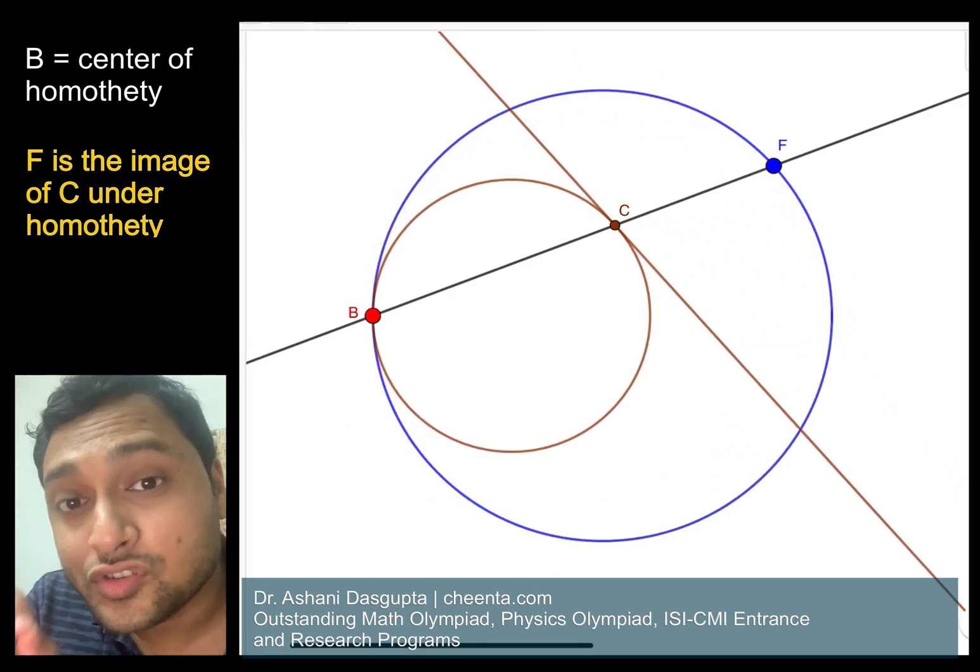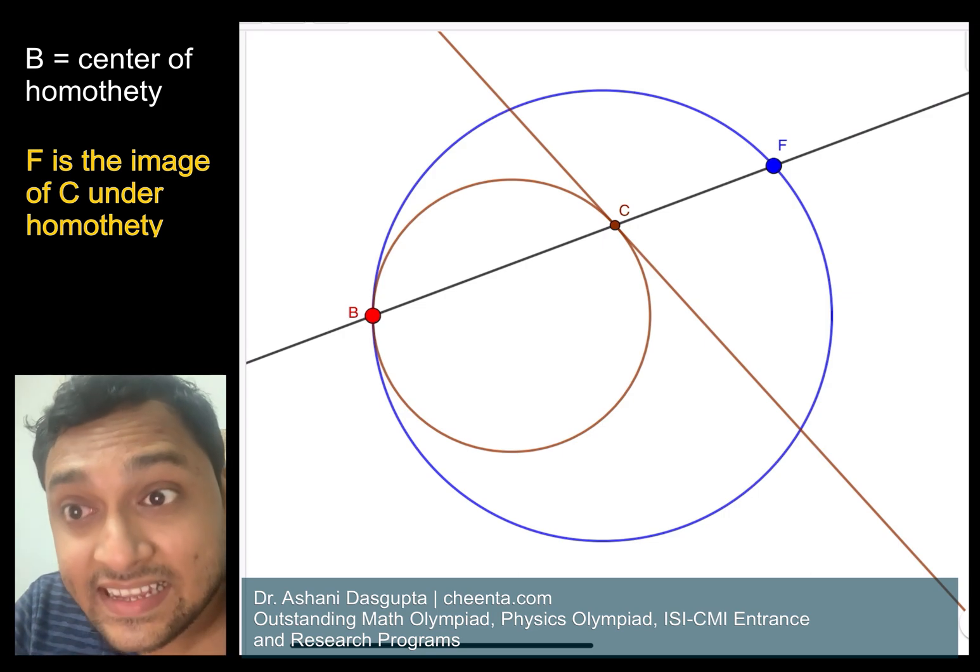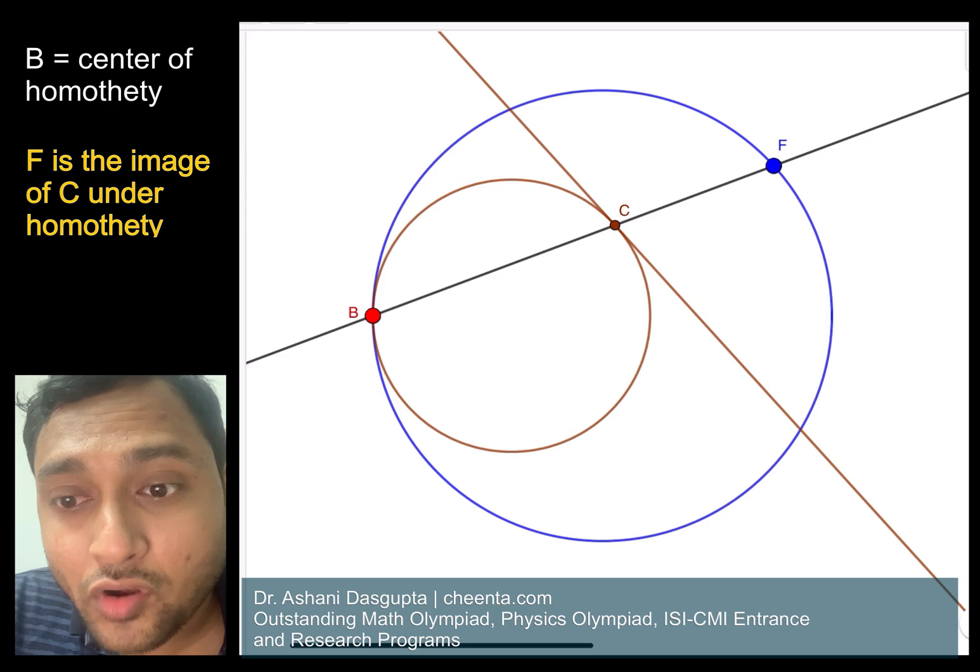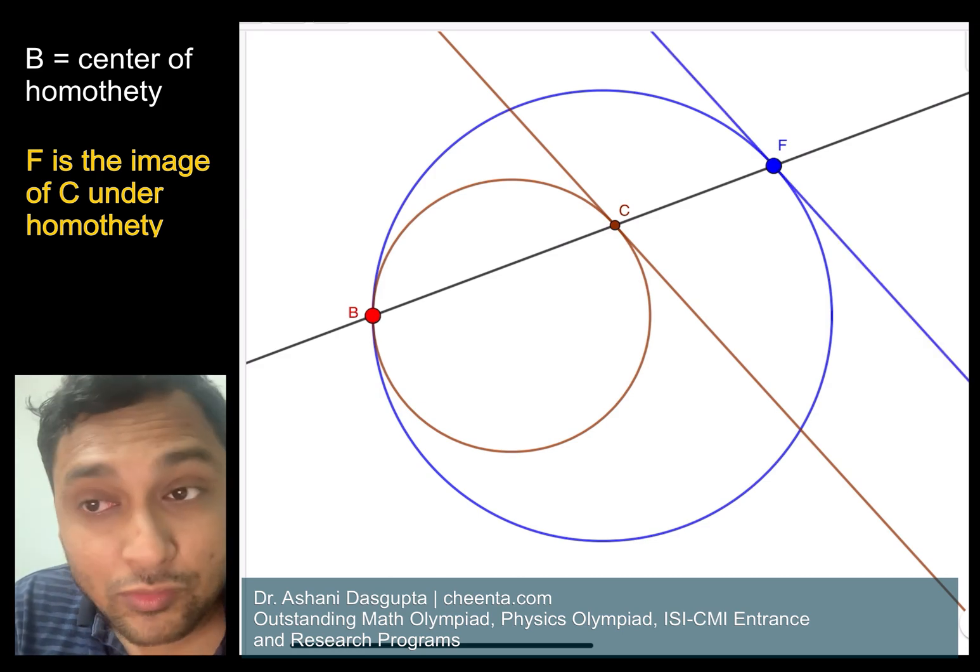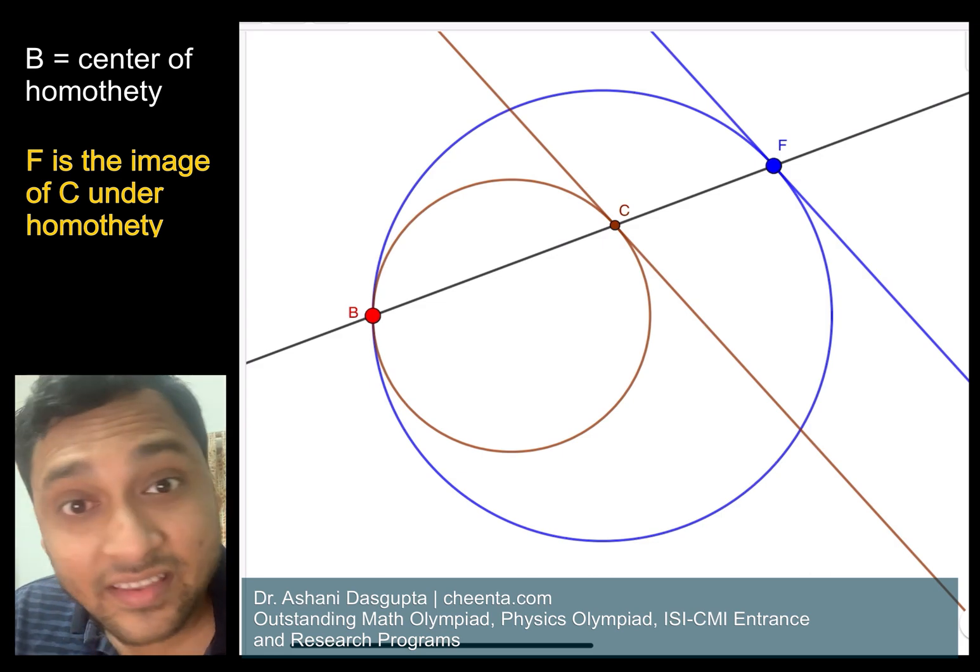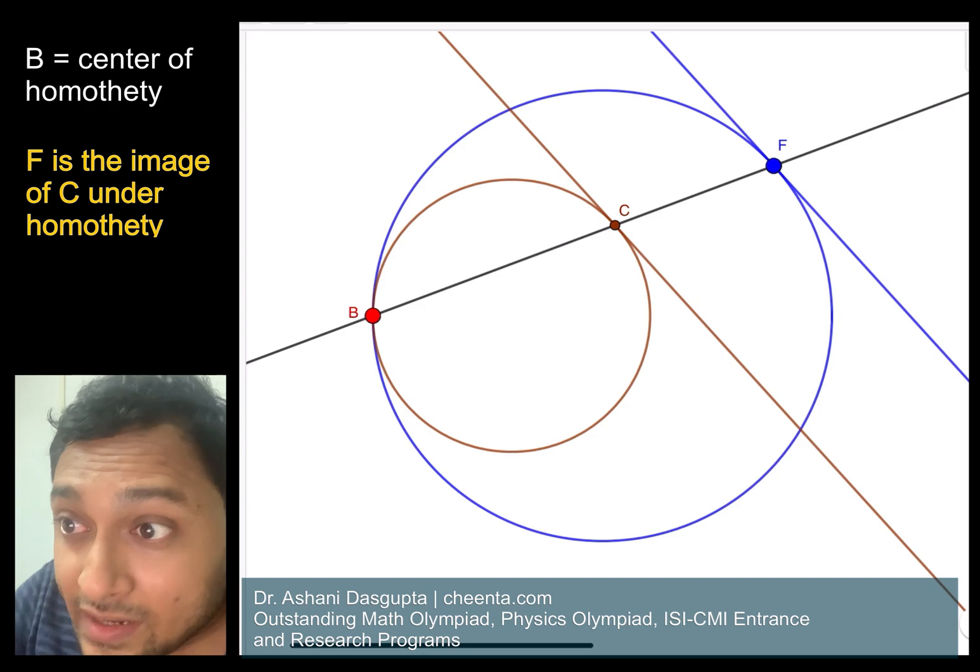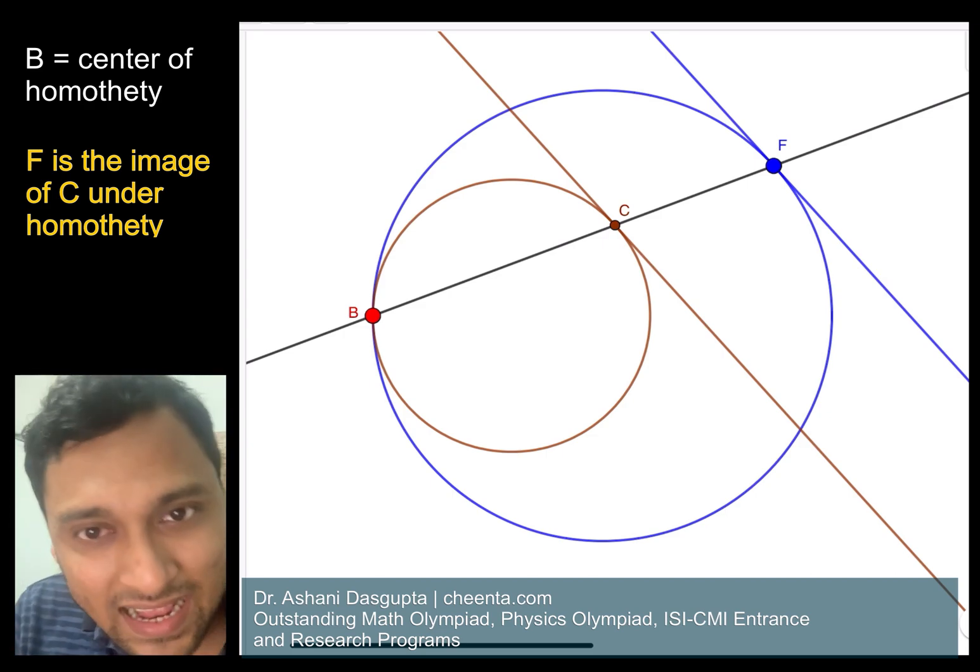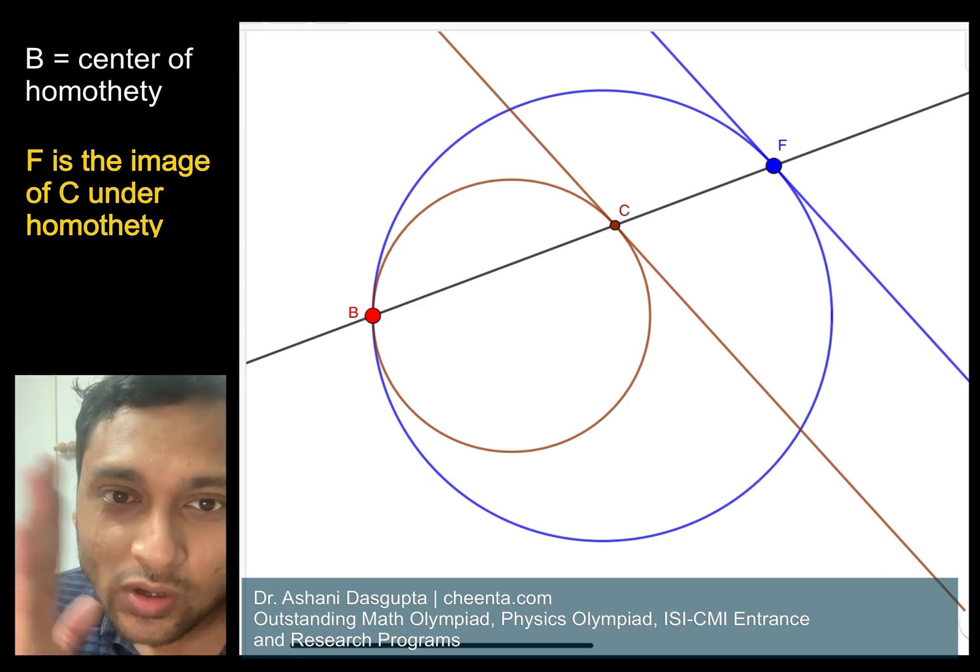And of course if I draw a line that is tangent to the blue circle at the point F, then this golden tangent will sort of sit on the blue tangent. The tangent to the golden circle becomes the tangent to the blue circle.